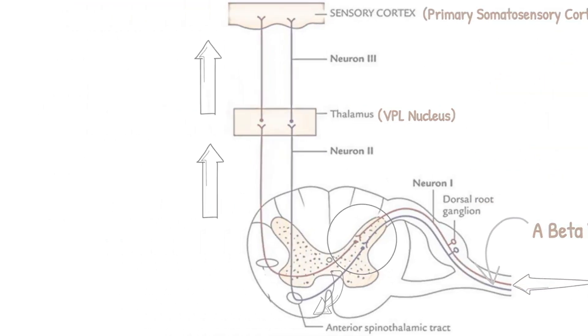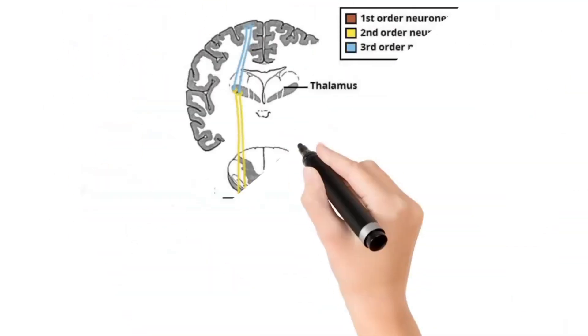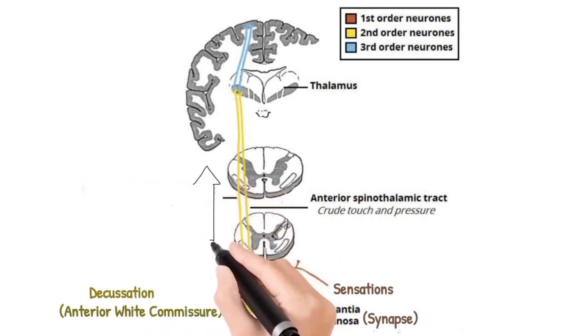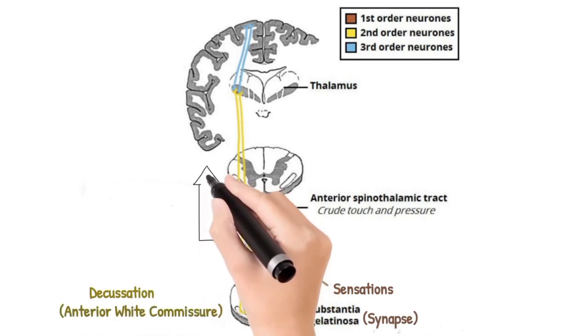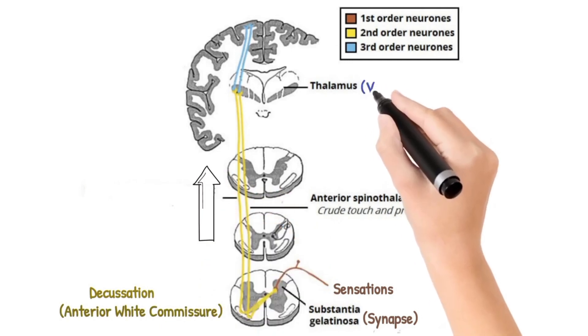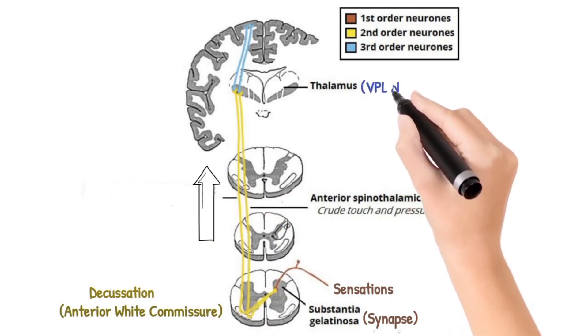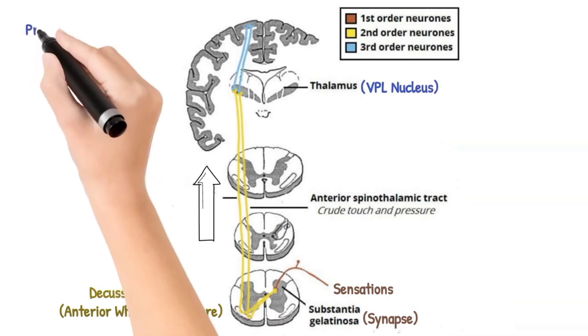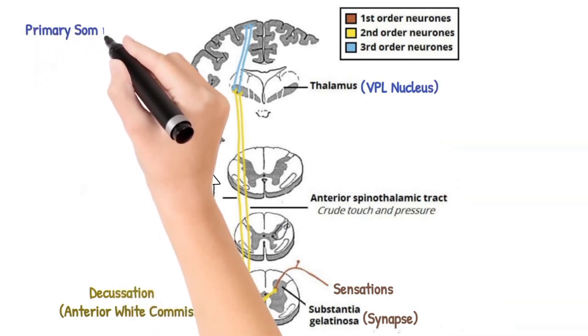Now we will discuss the pathway and order of neurons. The sensations are carried by first order neurons through dorsal root to substantia gelatinosa where synapse occurs. After synapse, the second order neurons ascend upwards, terminating in ventroposterolateral, that is VPL nucleus of thalamus, where synapse occurs. After synapse, the third order neurons ascend upwards to the primary somatosensory cortex of brain.